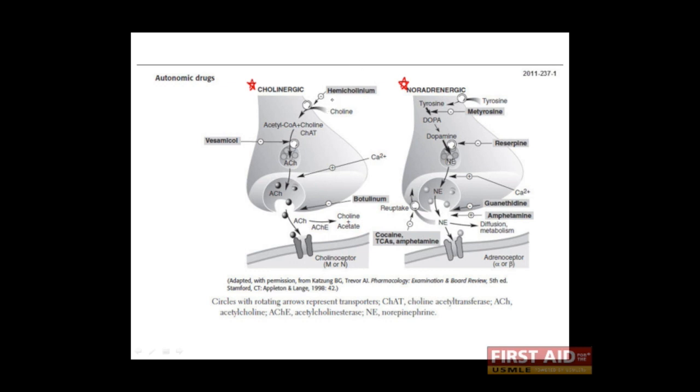The first step is simply taking up the precursor substance, which is known as choline. This is transported into the cell very close to the nerve terminal. Choline is then combined with acetyl-CoA by the enzyme known as choline acetyltransferase. This results in the acetylcholine neurotransmitter, which is then packaged into vesicles and prepared for release.